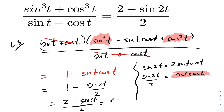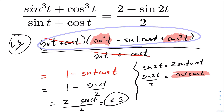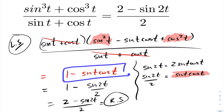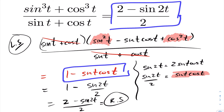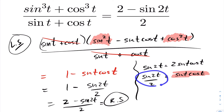Substituting sin t cos t = sin 2t / 2, we then get a common denominator and arrive at exactly the right hand side. So starting from the left hand side: we applied the sum of cubes formula, got cancellation, then substituted sin t cos t = sin 2t / 2, got a common denominator, and proved the right hand side.